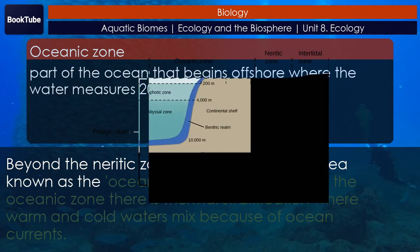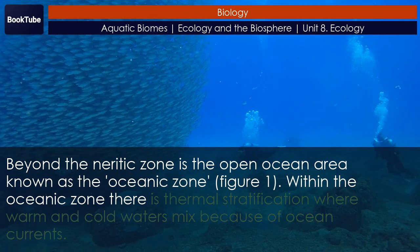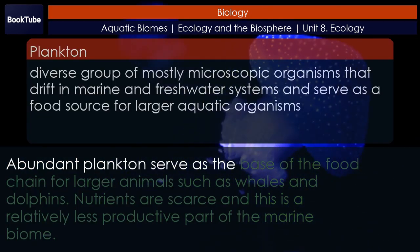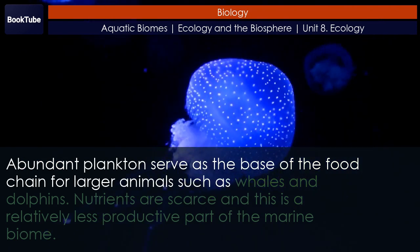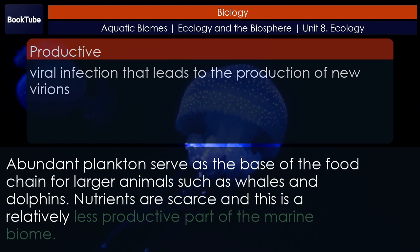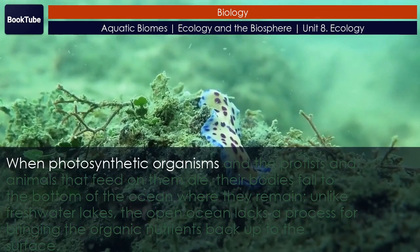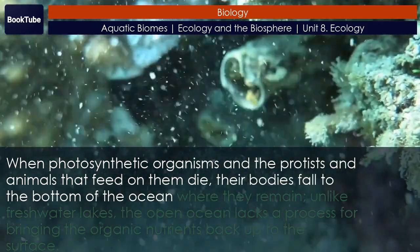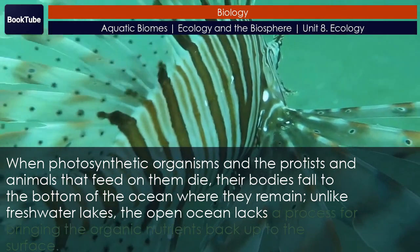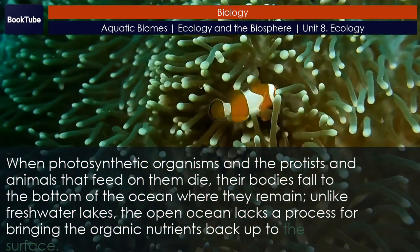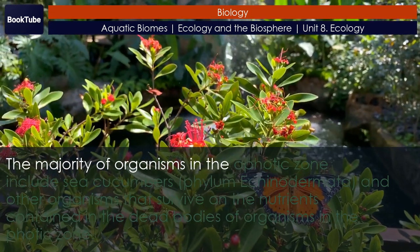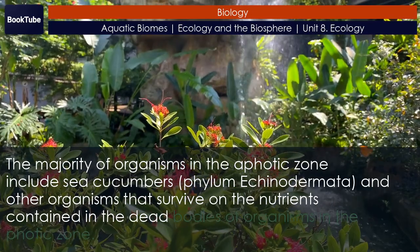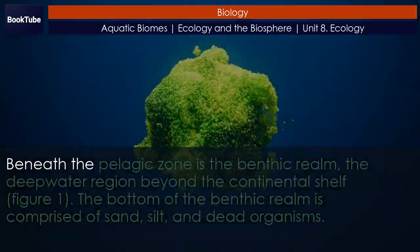Beyond the neritic zone is the open ocean area known as the oceanic zone. Within the oceanic zone there is thermal stratification where warm and cold waters mix because of ocean currents. Abundant plankton serve as the base of the food chain for larger animals such as whales and dolphins. Nutrients are scarce and this is a relatively less productive part of the marine biome. When photosynthetic organisms and the protists and animals that feed on them die, their bodies fall to the bottom of the ocean. Unlike freshwater lakes, the open ocean lacks a process for bringing organic nutrients back up to the surface. The majority of organisms in the aphotic zone include sea cucumbers and other organisms that survive on nutrients from dead bodies from the photic zone.